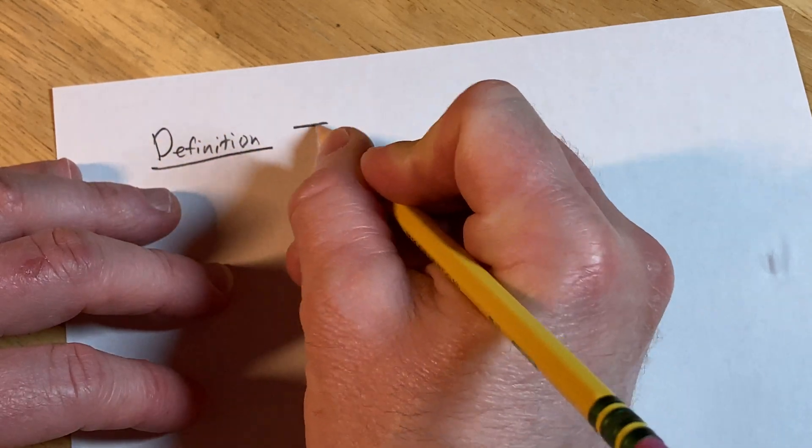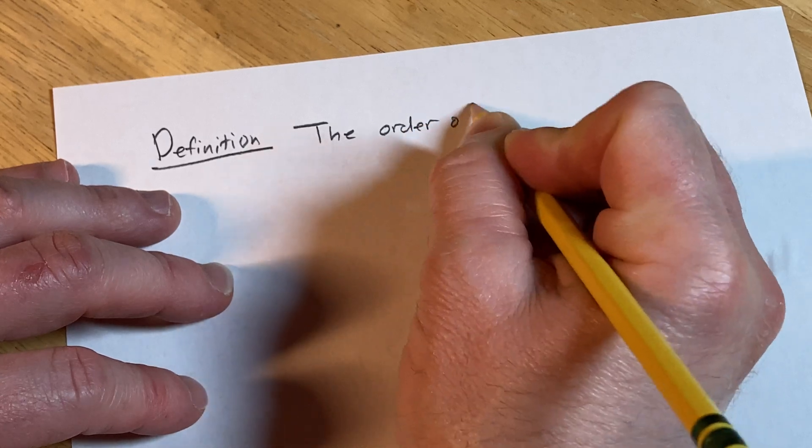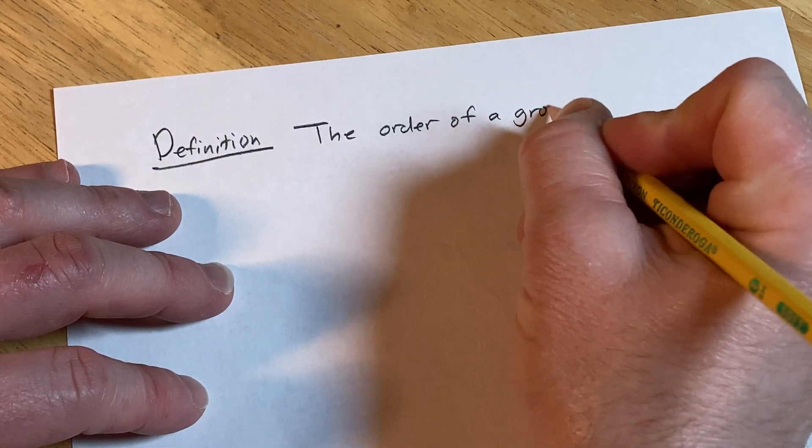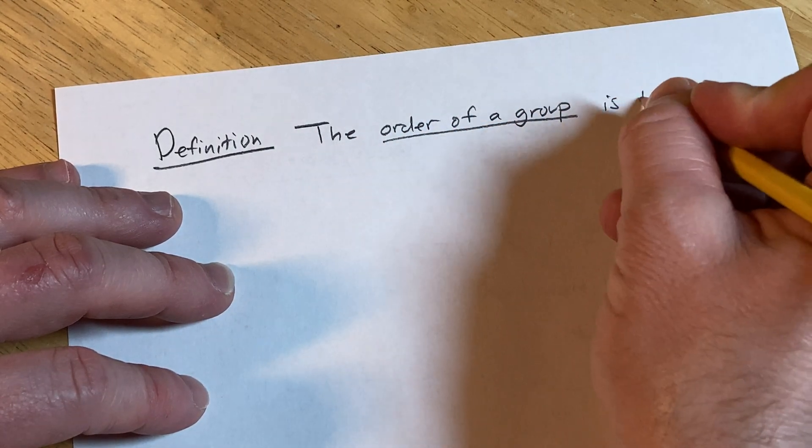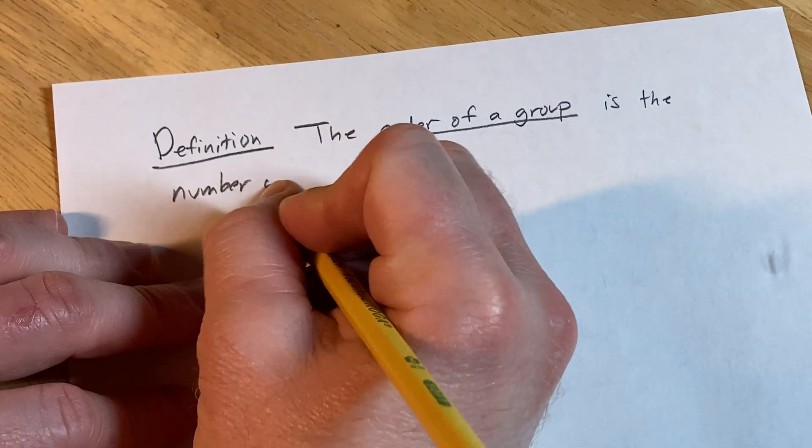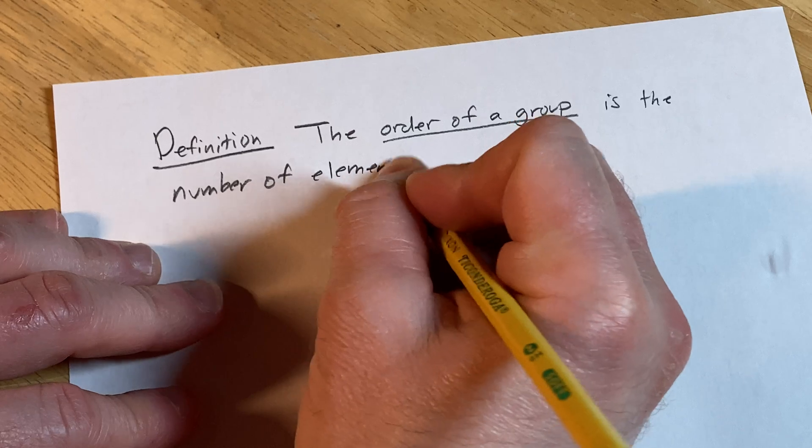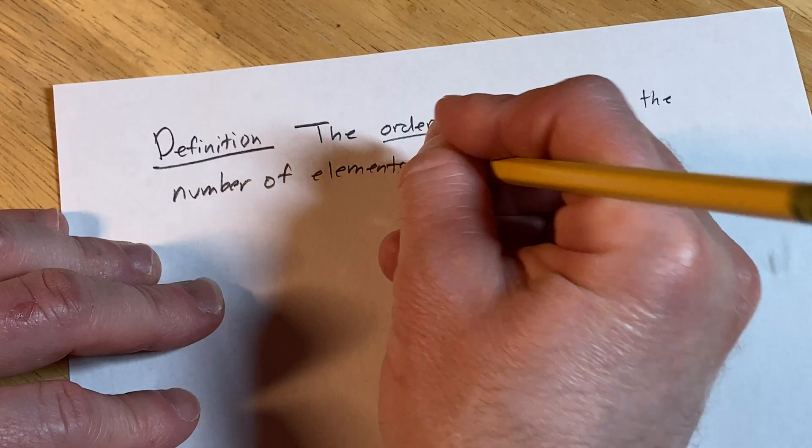Definition. The order of a group. The order of a group is the number of elements in G.